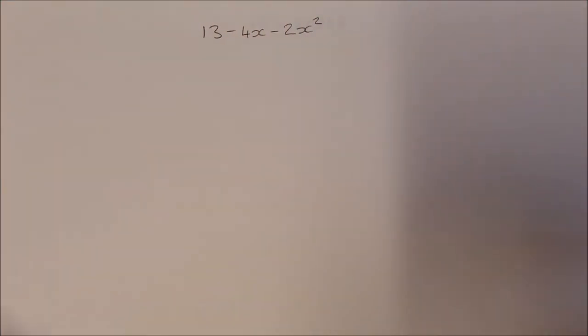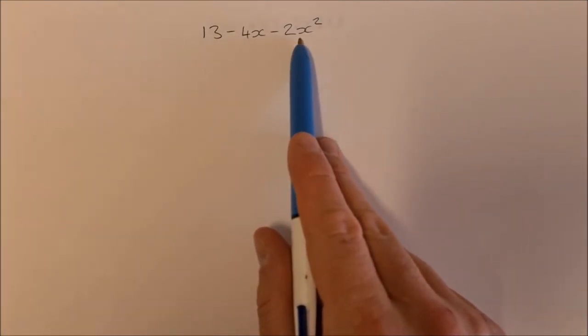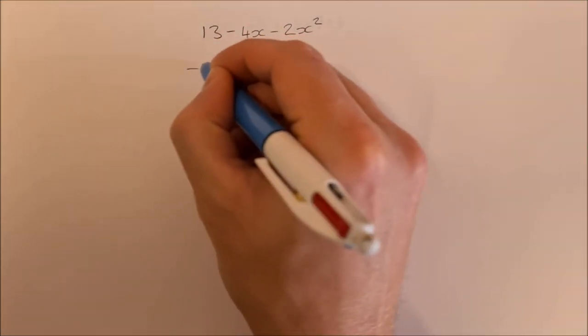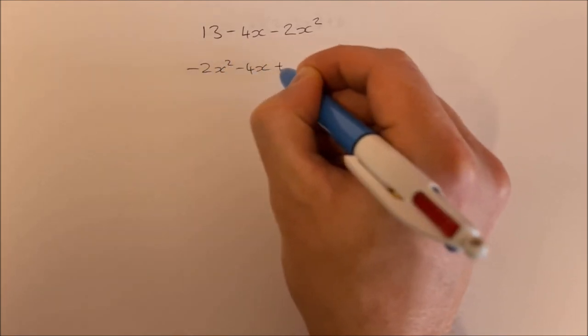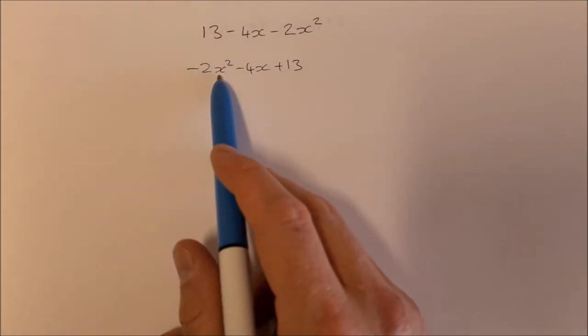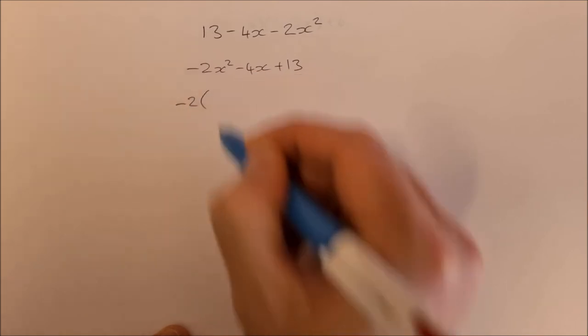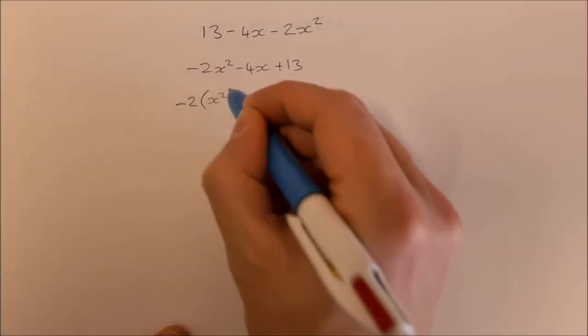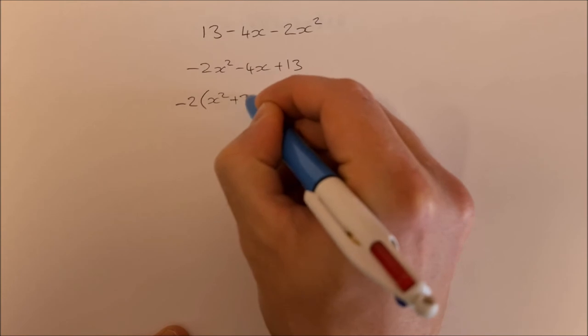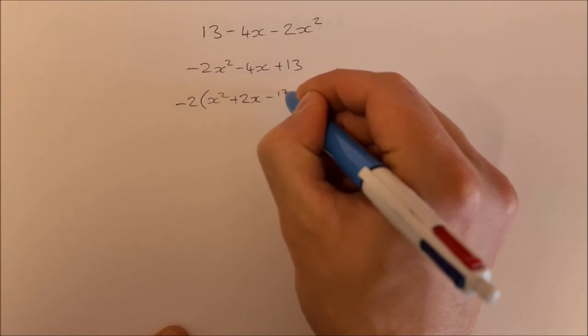Let's have a look at another one here. This one looks a little bit more complicated: 13 - 4x - 2x². With this one, let's write it the general way, which is -2x² - 4x + 13. In order to do completed square form, I need to have a leading coefficient of x² of 1. So I'm going to factorize out this minus 2: -2(x² + 2x - 13/2).